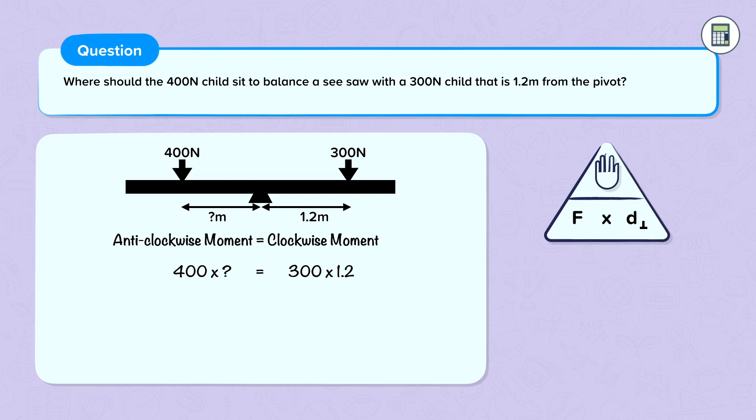So in equilibrium, our clockwise moment equals our anti-clockwise moment. So our anti-clockwise moment is 400 times the mystery distance, and that must equal 300 times 1.2. Let's perform this calculation. So 400 times the mystery distance is 360.